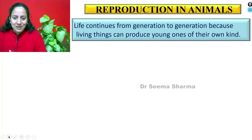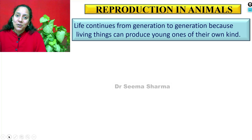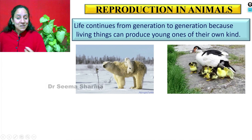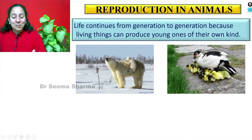Reproduction in animals: life continues from generation to generation because living things can produce young ones of their own kind. You can see a polar bear giving birth to a polar bear, and a duck laying eggs from which ducklings hatch. Life is continuing generation after generation, and the process helping in this continuation is reproduction. The process by which living beings produce young ones of their own kind is called reproduction.